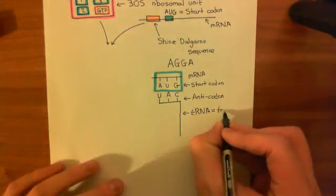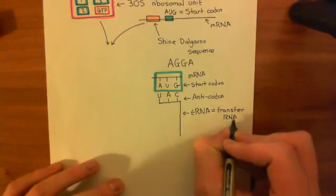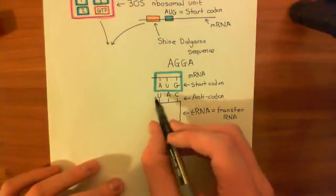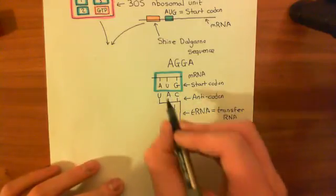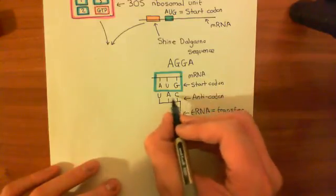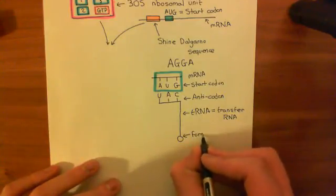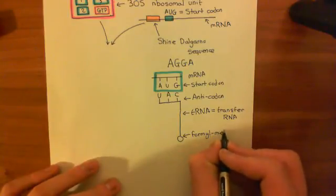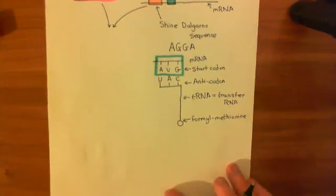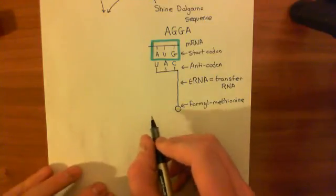This transfer RNA will come in and it will have an amino acid joined to it that is specific to the anticodon it has. tRNAs all have different anticodons, and the amino acid attached to them is specific to the combination of organic bases in their anticodon. Now, this tRNA which has the complementary anticodon to the start codon has an amino acid known as formylmethionine attached to it. Formylmethionine is actually a modified amino acid; methionine is the amino acid and formyl is a slight modification of it.